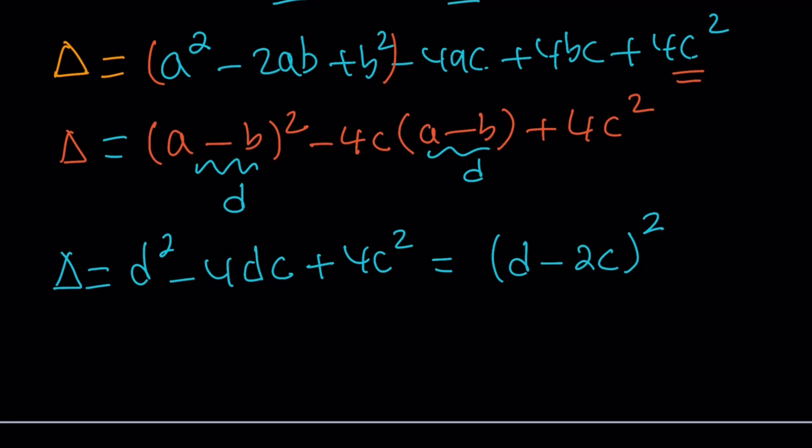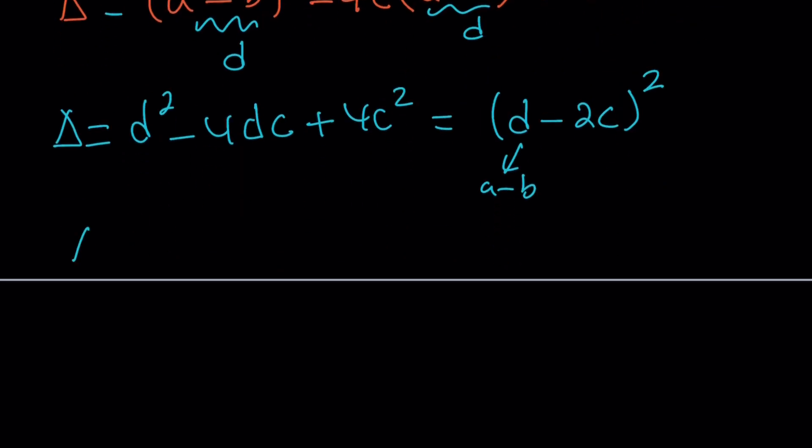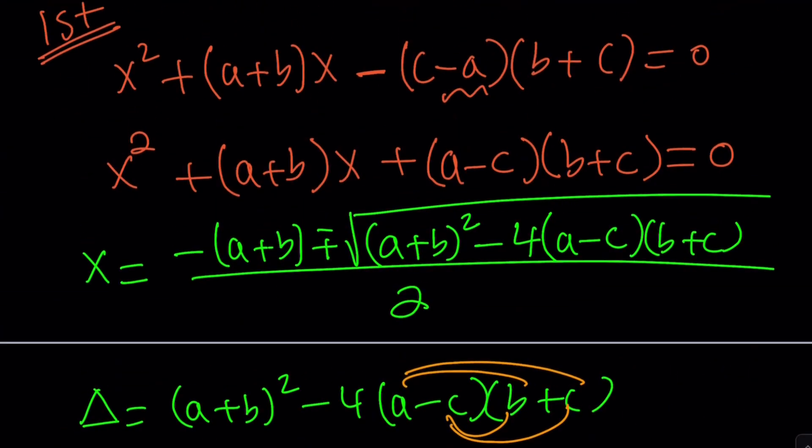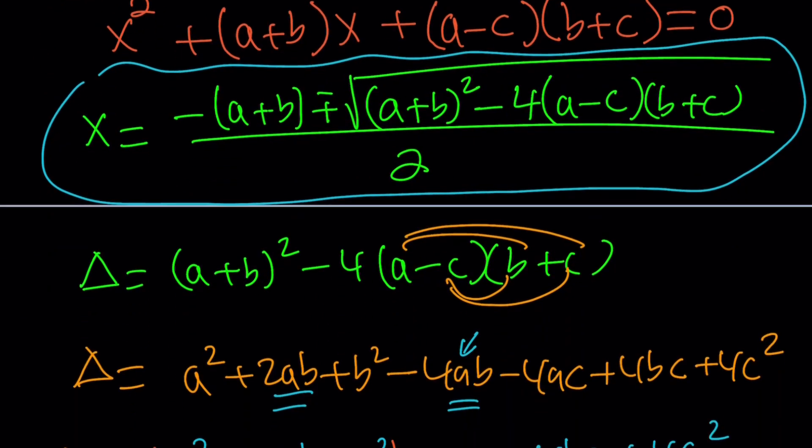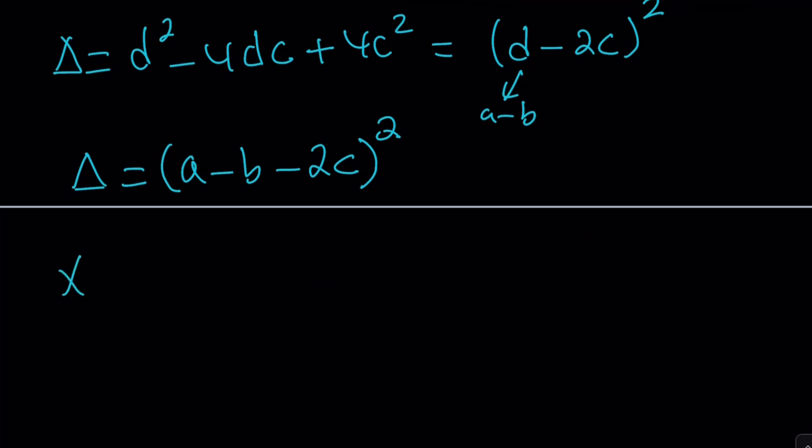Now, let's back substitute. What is d? d is a minus b. So delta, or the discriminant, becomes a minus b minus 2c, or not 2c squared. Awesome. Now, we are ready to plug it into the quadratic equation—I mean, the solution of the quadratic. Here, the quadratic formula, I mean. So let's go ahead and plug it in. We have x equals the opposite of a plus b plus minus the square root of delta. But delta is squared. So if you just square root it, the square is going to go away, and we're going to end up with this. And isn't that beautiful?